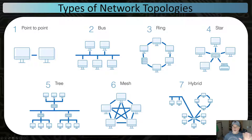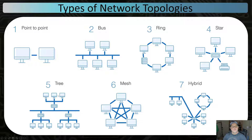A star topology uses a hub. A hub used to do the same thing as a ring — ask each port if the data is for it. A combination is a tree or hybrid tree-bus: a main bus with other tree networks connected to it. Connected with hubs, data would flow to each hub looking for the destination.